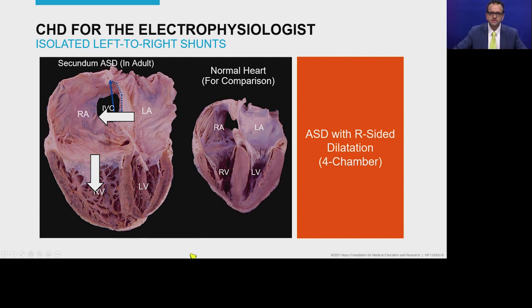In a normal ECG, the QRS is formed by a summation of activation going over the left and right ventricle. The predominant vector is created by the left ventricle because the chest leads are placed on the left side of the chest. So when you start to see changes of right ventricular enlargement on the ECG, it suggests that significant right ventricular enlargement has already happened, because only then does the axis change and you see findings consistent with right ventricular enlargement.